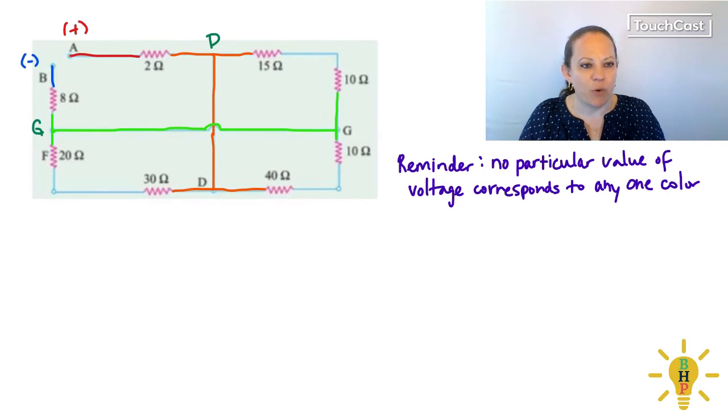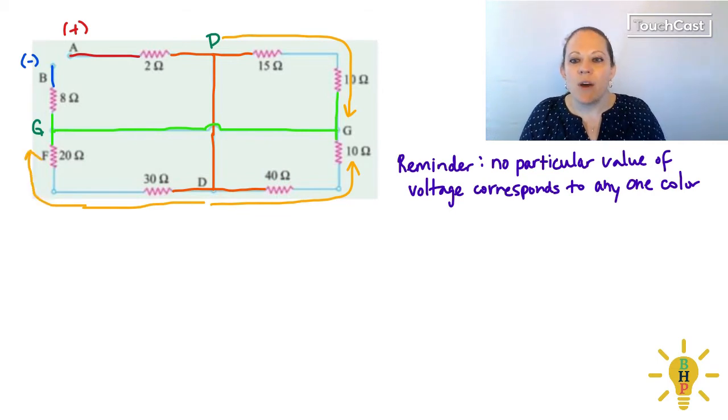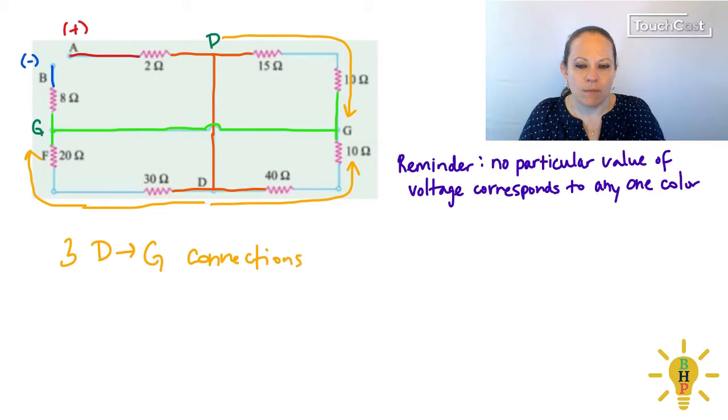And so what I want to highlight for you here is that we have a D to G connection this way. We have a D to G connection this way. And we have a D to G connection this way. So what this tells me is there is some other way that we can draw the circuit to show those three D to G connections. So give me just a moment to finish that. And now let's go ahead and redraw this.